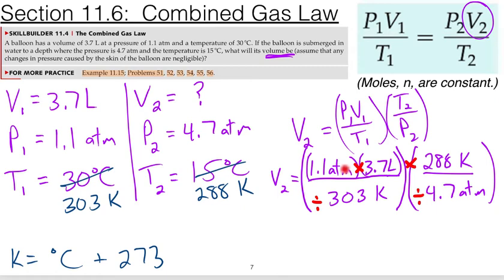This is really a dimensional analysis type of logic here. If you can rearrange your expressions to where the units that are not of interest cancel out, which is what's happening here, and then you're just left with the unit that you want, in this case liters, then that gives you a pretty good idea that you have done the calculation correct. And we have here. So again, if I plug on my calculator, 1.1 times 3.7 times 288 divided by 303 divided by 4.7, we are going to get 0.832 liters is our new volume.